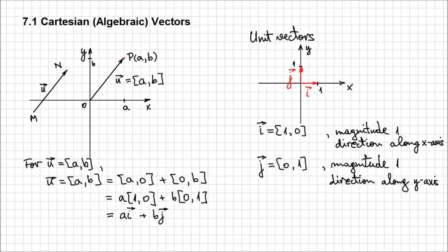One more thing. If you look on the graph, the magnitude of this vector is the hypotenuse in this right triangle, which has sides of length a and b. Applying the Pythagorean theorem, I can say that the magnitude of this vector is the square root of a² plus b², because these are the sides of that right triangle in which the hypotenuse is the magnitude of u. So that's how you calculate the magnitude of an algebraic vector.